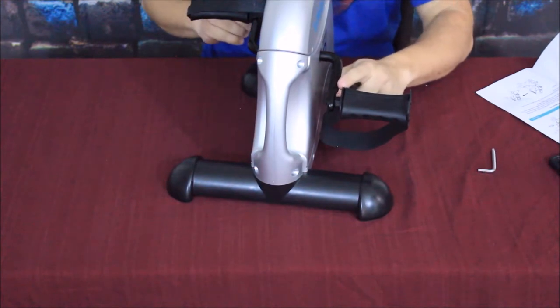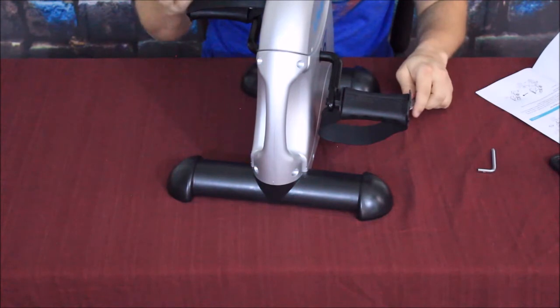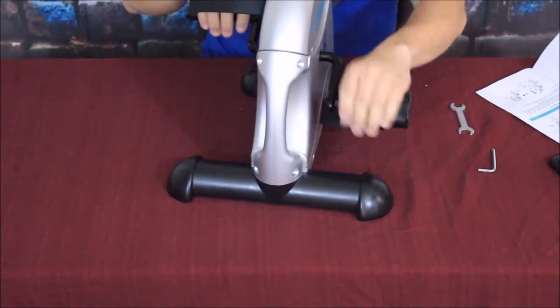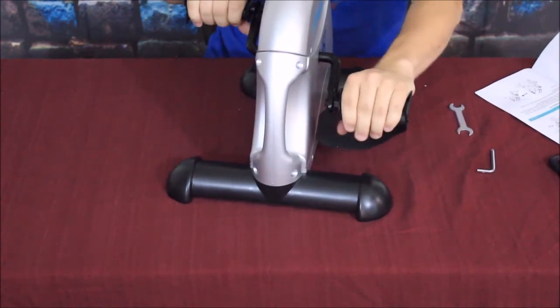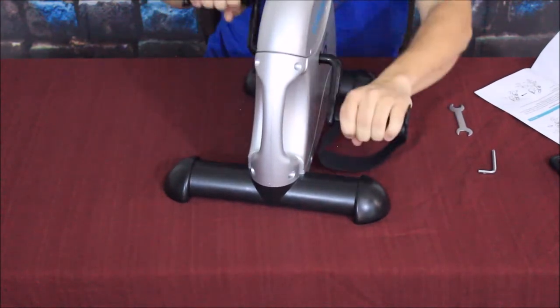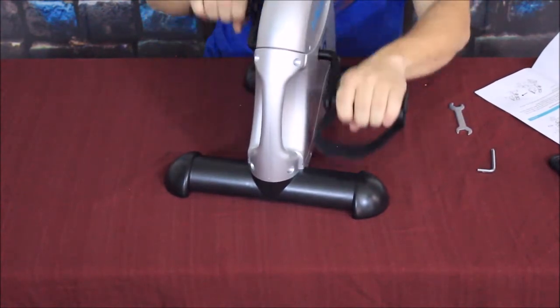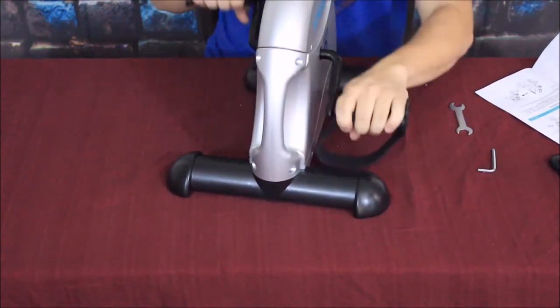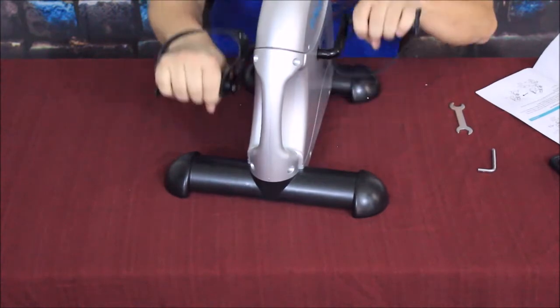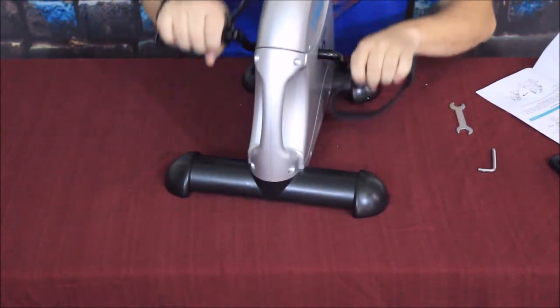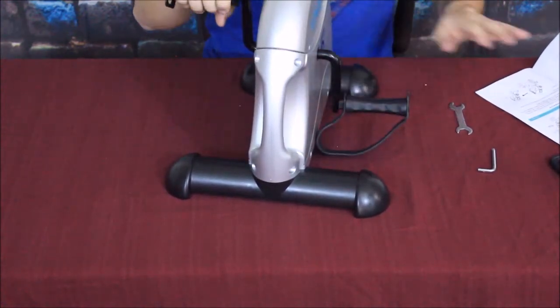Now of course when you tighten these up you definitely want to make sure these are tightened in there pretty firmly because you don't want them falling out on you while you're trying to ride or pedal. Again, this can be used with the hands, this is kind of the way it's set up right now, and we've got it moving. Now as I started moving it like this, the LCD did kick on and it is giving me a readout of what's going on. To understand a little bit better you would definitely want to check out the instructions to know specifically what it's doing.